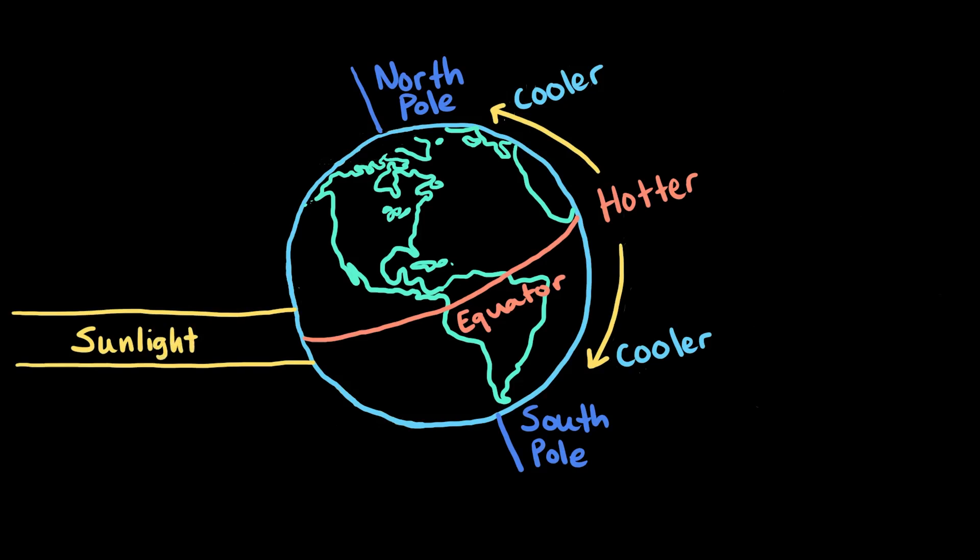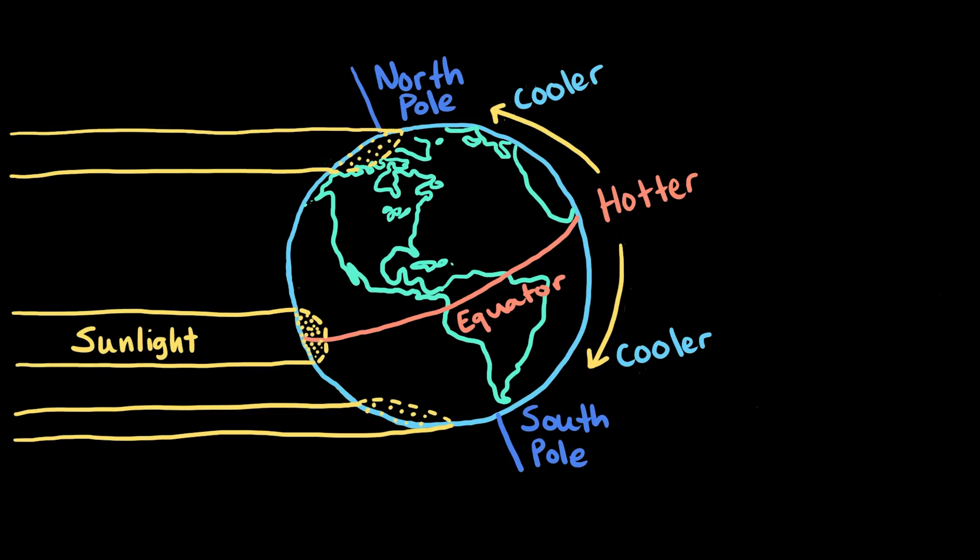Near the equator, the sun's rays hit Earth's surface more directly, while near the poles, the sun's rays hit Earth's surface less directly. In both regions, the same amount of solar energy is hitting Earth. But near the equator, this energy is concentrated into a smaller area, and near the poles, it's spread out over a large area.